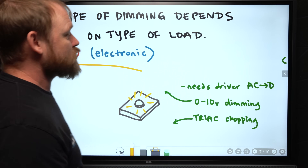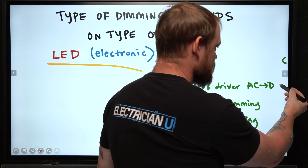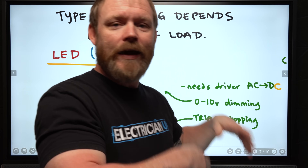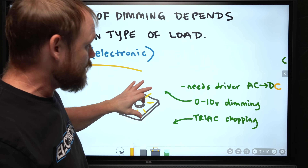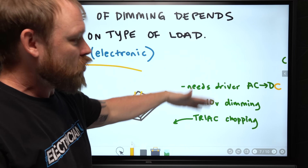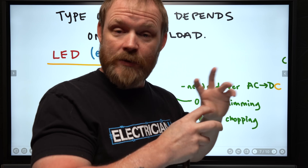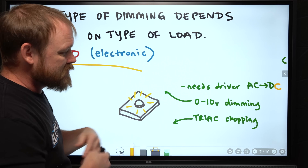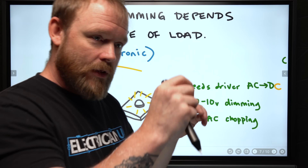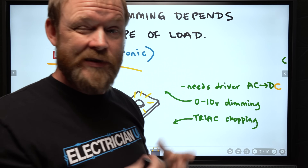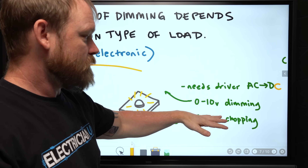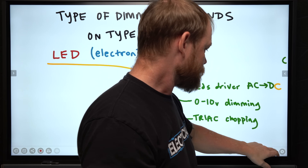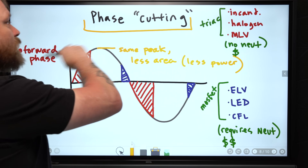LED lighting is very common and electronic in nature - it needs a driver. You're taking AC and converting it to DC, and DC drives the actual bulb. LEDs can use zero-to-10-volt dimming for external control of dimming levels, or they can still use a triac. A lot of normal wall dimmers used in houses chop part of the waveform off - that's how they achieve their dimming.